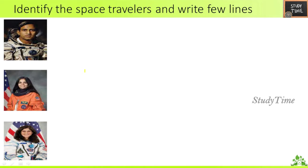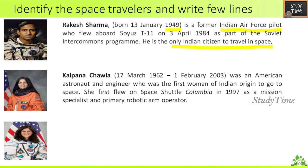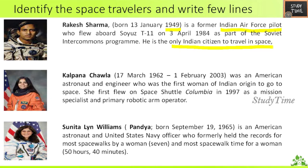Identify the space travelers and write a few lines. First — Rakesh Sharma, born in 1949, is a former Indian Air Force pilot and the only Indian citizen to travel in space. Next — Kalpana Chawla was an American astronaut who first flew on Space Shuttle Columbia in 1997. Next — Sunita Williams, born on September 19, 1965, is an American astronaut and United States Navy officer who formerly held the record for most spacewalks by a woman — seven spacewalks totaling 50 hours and 40 minutes.